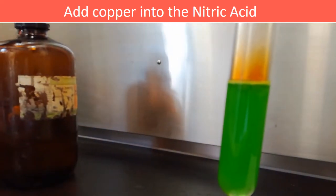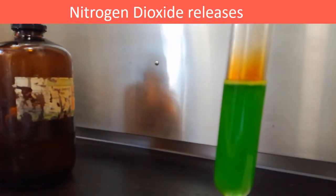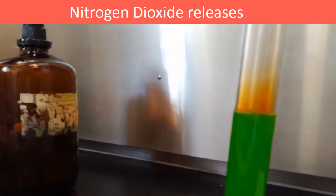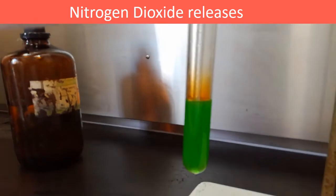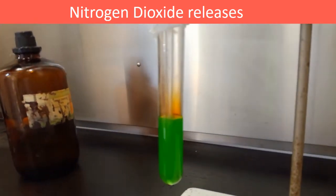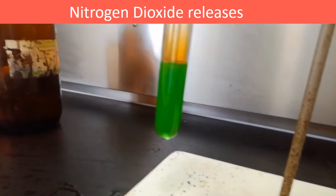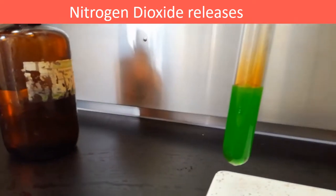Now, we can see the brown color nitrogen dioxide gas is formed inside the test tube. If you observe well, you will be able to see the gas is slowly moving in the upper direction inside the test tube.